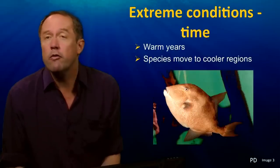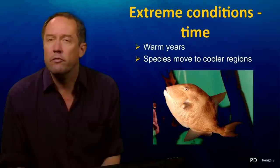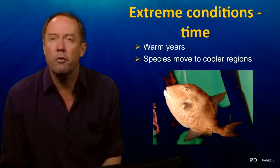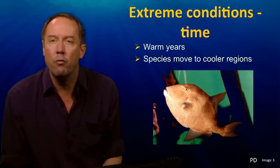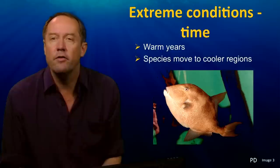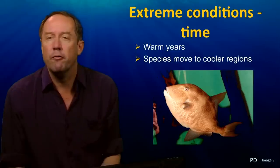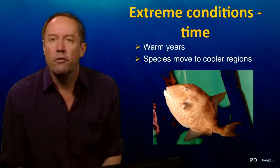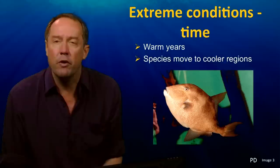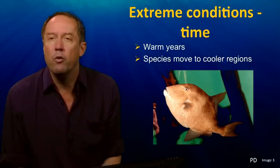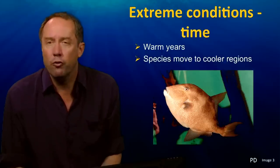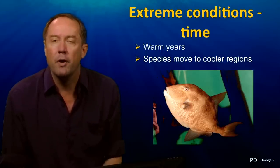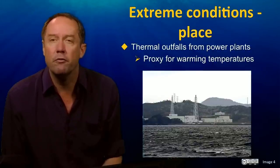There are also small periods of warming — particularly warm years or months that are warmer. In this case we often find subtropical or tropical species move into temperate regions where they weren't normally for a short period of time. And this also enables us to predict the future.